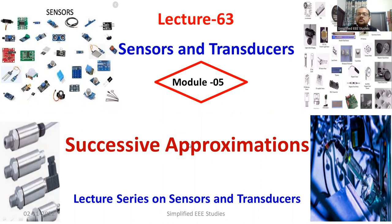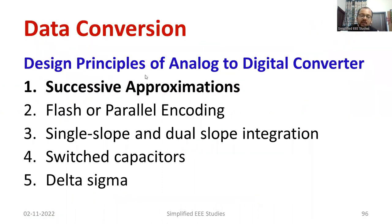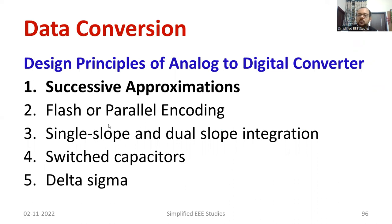It is one of the techniques by which you can convert data from analog form to digital form. There are different techniques to convert analog data into digital data. The first one is successive approximation, second is flash or parallel encoding, third is single slope and dual slope integration technique, fourth is switched capacitors, and finally delta-sigma technique. These are the few important techniques which help to convert analog data to digital data.